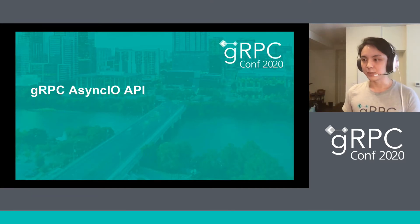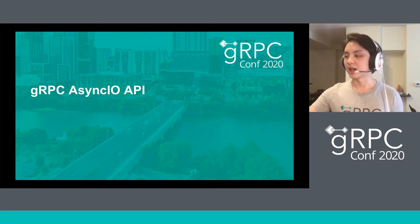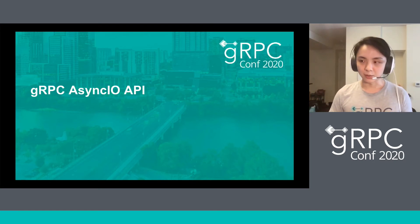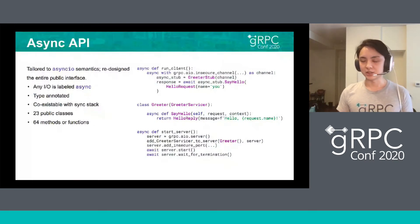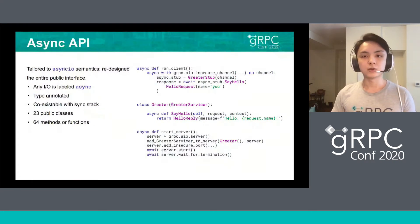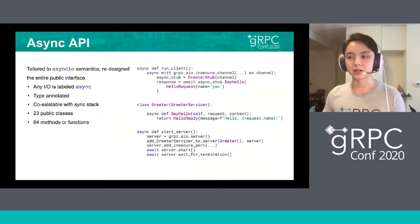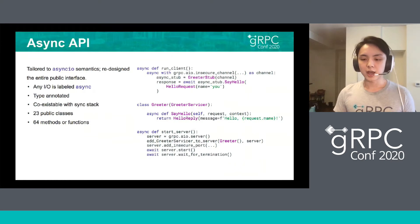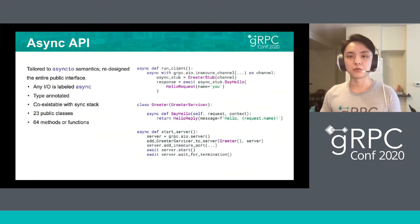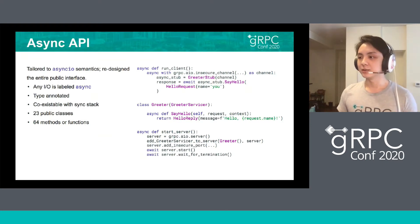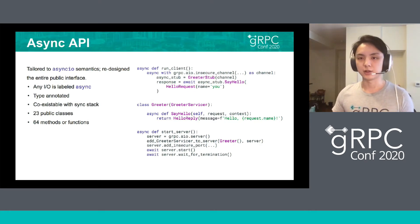So next, let me try to sell the asyncio API through some of these highlights. The async API was tailored to the asyncio semantic, and it has redesigned the entire public interface. It includes 23 new public classes and 64 methods or functions. All the I/O operations are now labeled with async, and it's now type annotated, so it's more friendly to larger projects. On the right side is a short example about how to use the asyncio API.